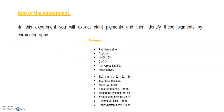The aim of this experiment is to extract plant pigment and then identify these pigments by chromatography. The materials you need are: petroleum ether, acetone, 10% sodium chloride, calcium carbonate, anhydrous sodium sulfate, fresh leaves, a TLC chamber (22×22×10 cm), TLC silica gel plate, mortar and pestle, separating funnel (100 mL), measuring cylinders (100 mL and 25 mL), an Erlenmeyer flask (100 mL), and a round-bottom flask (100 mL).